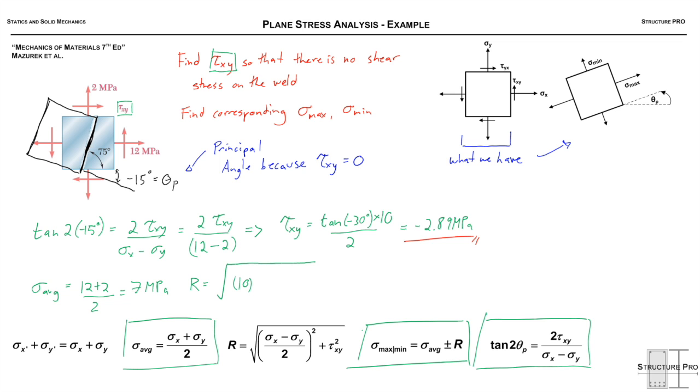Next we can find R, which is the square root of 10² plus (-2.89)², giving us 5.77 MPa. Therefore, σ_max is the average plus R, or 12.77 MPa.